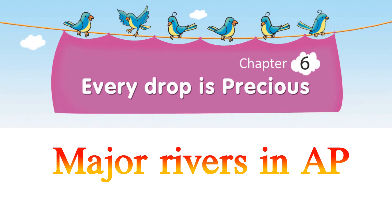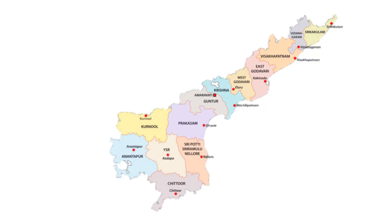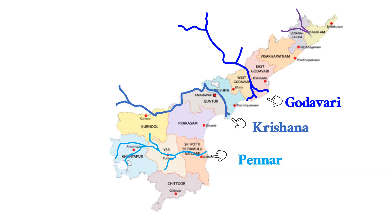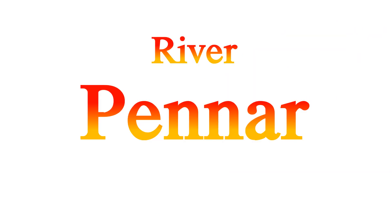Major rivers in Andhra Pradesh: Penna, Krishna, Godavari, Nagavani, and Vamsadhara are the major rivers in our state. Now let us learn about them one by one. First, Penna River.